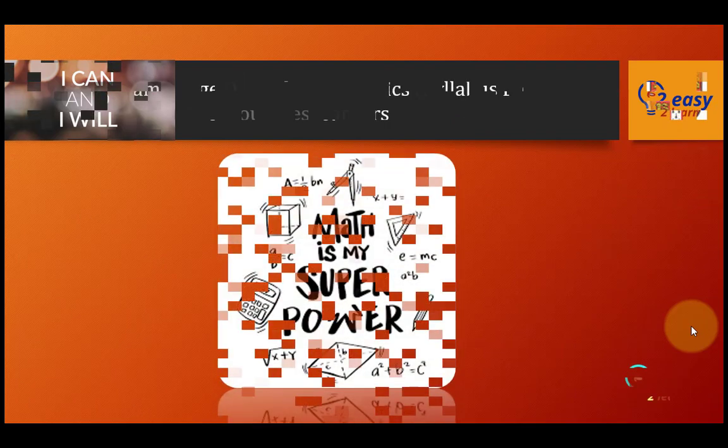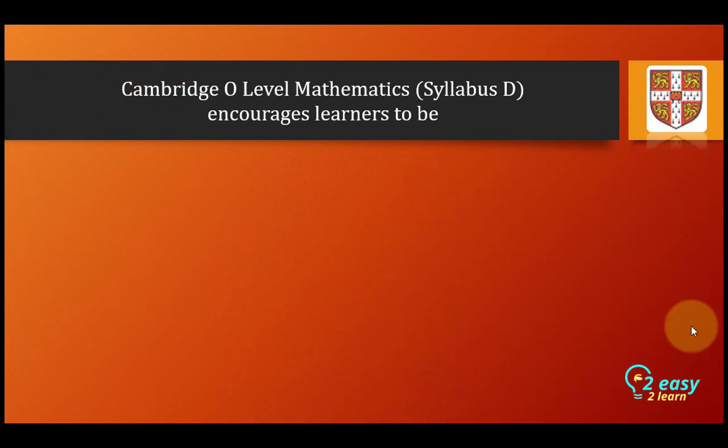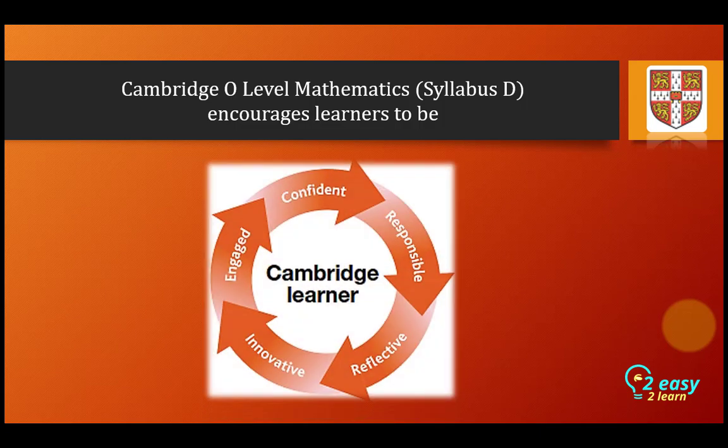Let's start the discussion. Cambridge O Level Mathematics encourages learners to be engaged, confident, responsible, reflective, and innovative. These are the characteristics of the Cambridge learner.